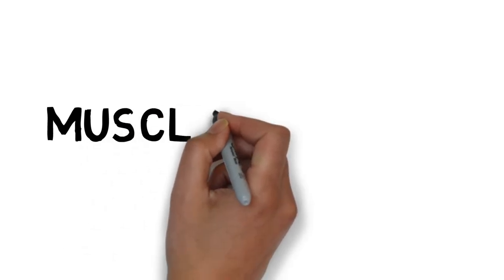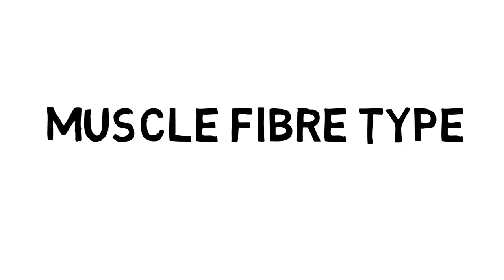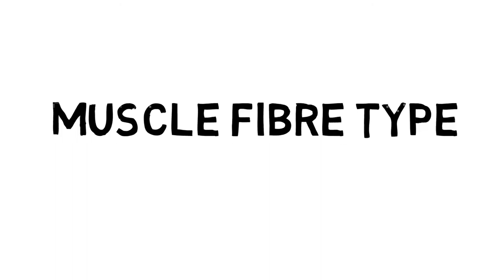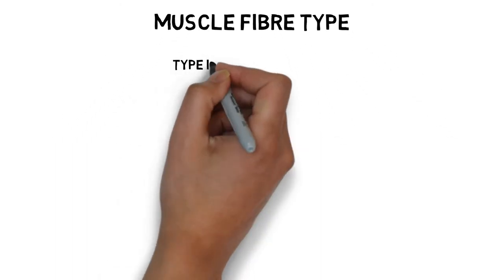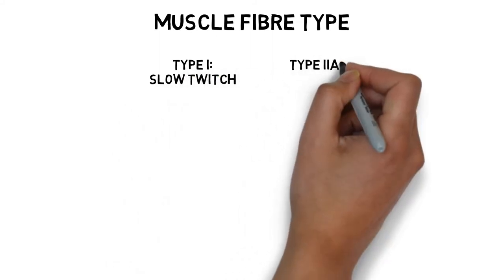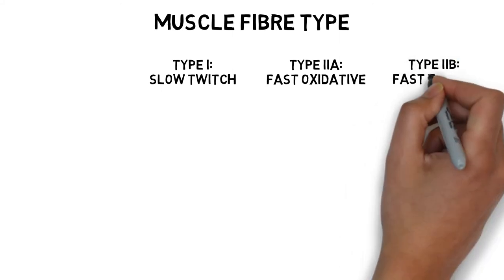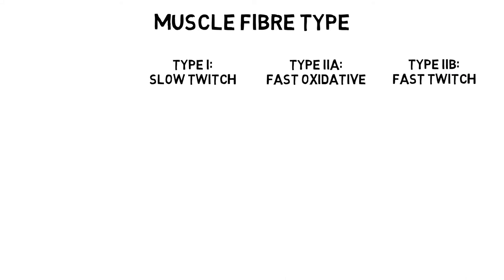Not all muscles are made up in the same way. We have three different types of muscle fibre, and it is genetically determined — although between 10 and 20% of our fibres can be adapted through training. The three different fibre types are: Type 1 or slow twitch, Type 2a or fast oxidative, and Type 2b or fast twitch.